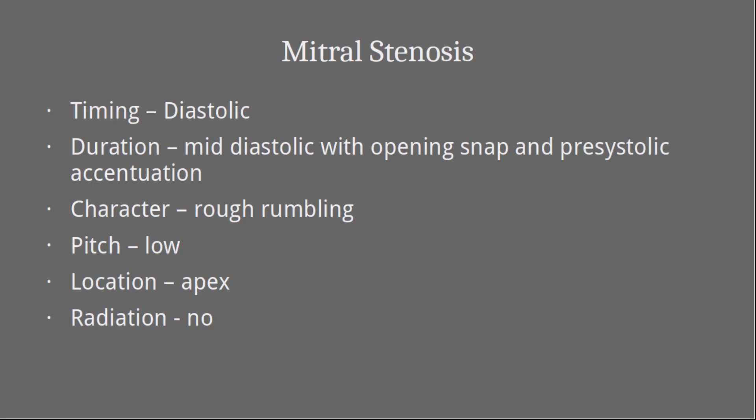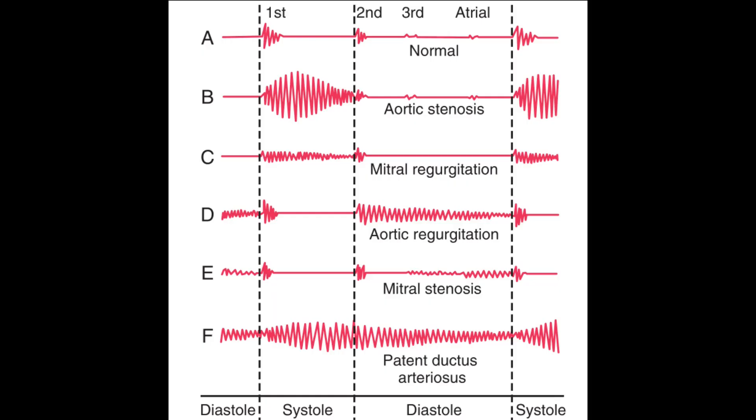The mitral stenosis murmur occurs due to blood flow into the ventricles, so it is a diastolic murmur. There is an opening snap at the beginning because the calcified valves make a noise when they open. It is a mid-diastolic murmur occurring after the isovolumetric relaxation phase during rapid filling, with a presystolic accentuation due to atrial contraction, also known as the atrial kick. It is a rough, rumbling murmur heard best at the apex and does not radiate. The key to differentiating systolic and diastolic murmurs is understanding whether blood flow is into or out of the ventricles.